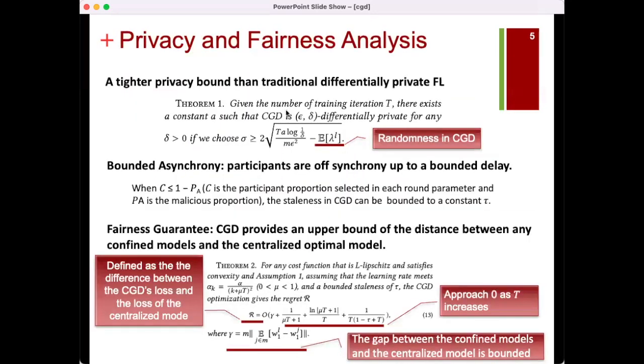Our analysis within the framework of differential privacy demonstrates CGD's superior privacy guarantees compared to traditional approaches, saving a factor of expectation of lambda, which is the randomness in confined models.